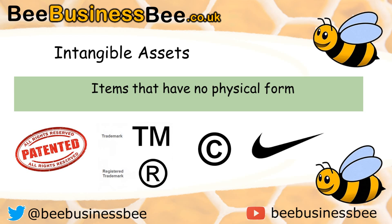The opposite of a tangible asset is an intangible asset. These are assets that have no physical form — you can't physically touch them. For example, a patent, a trademark, a copyright, or maybe a logo, brand, or even customer loyalty. You can put a value on them, but you can't physically touch them.